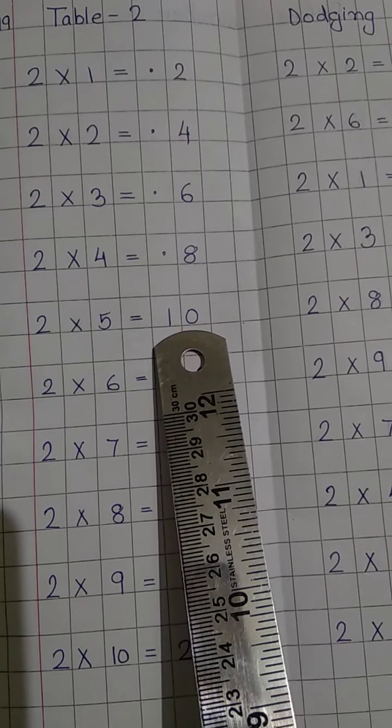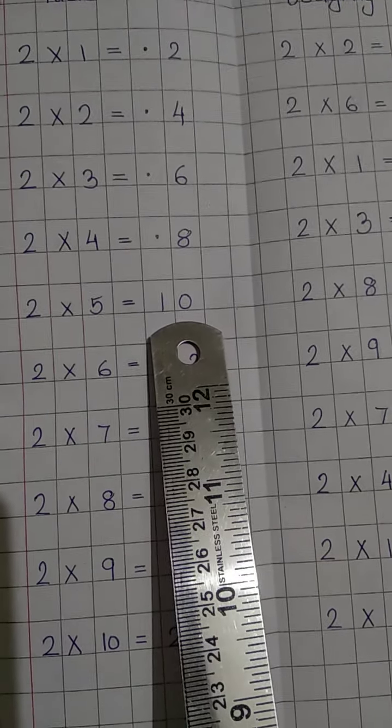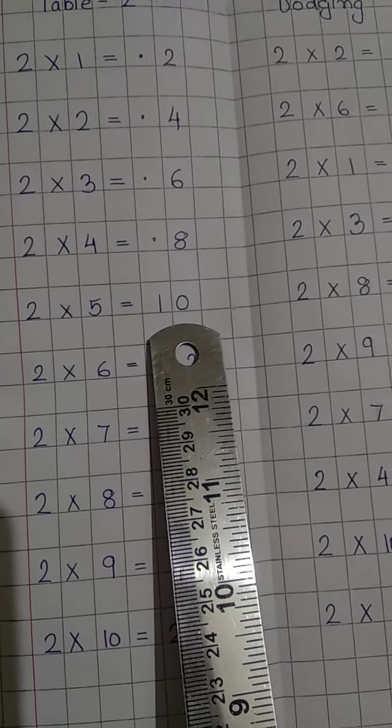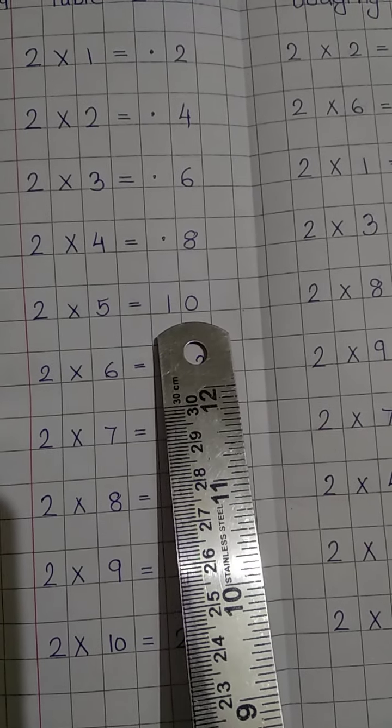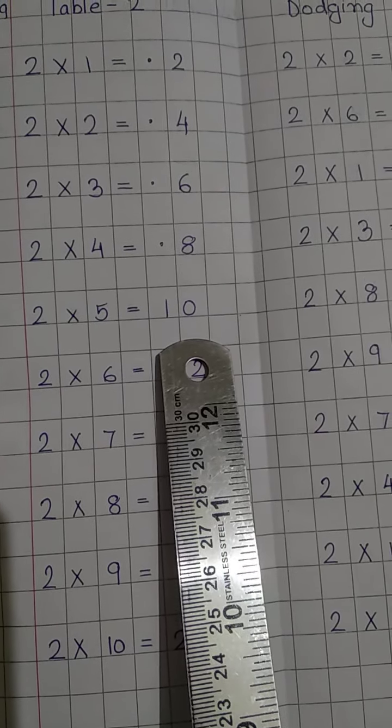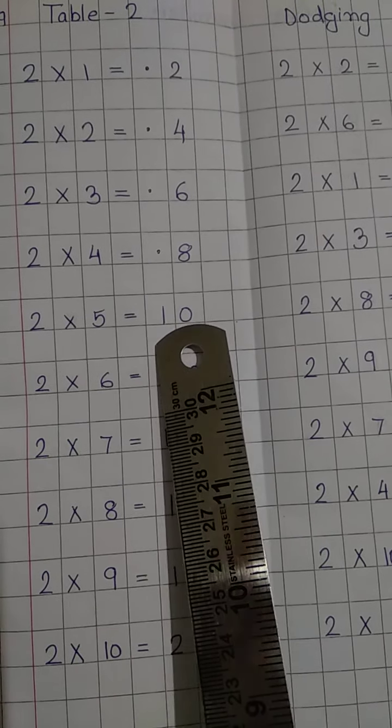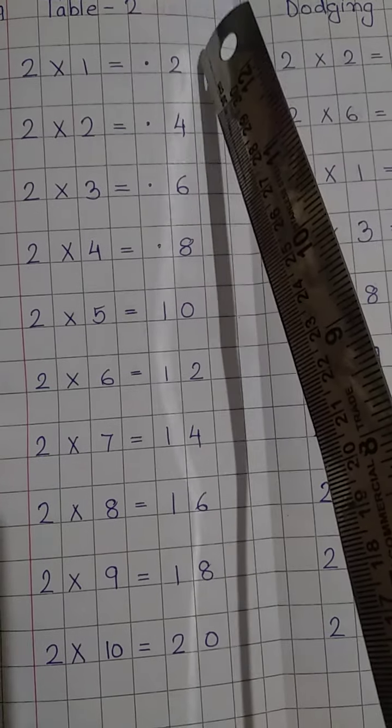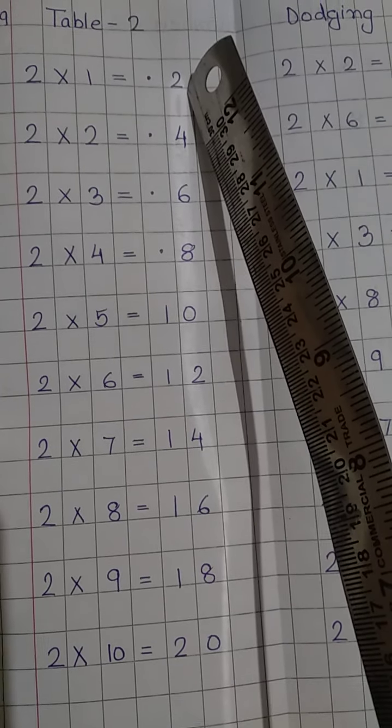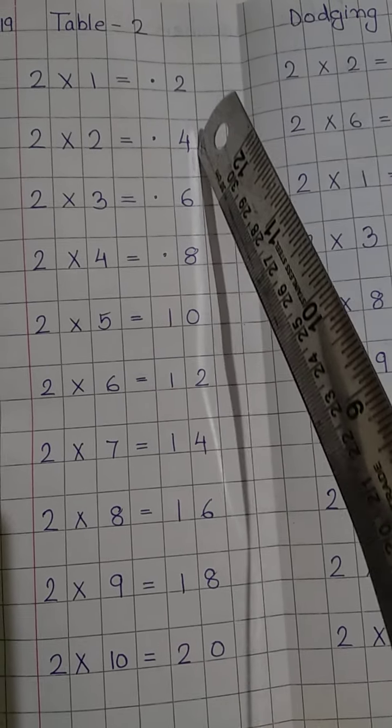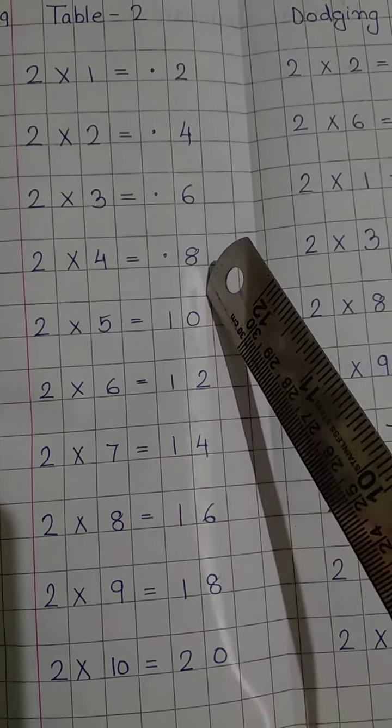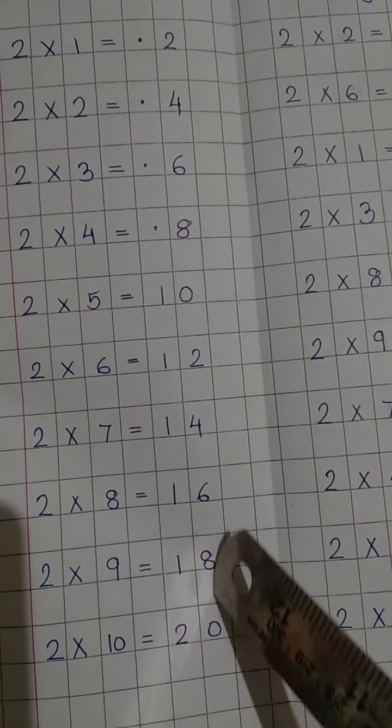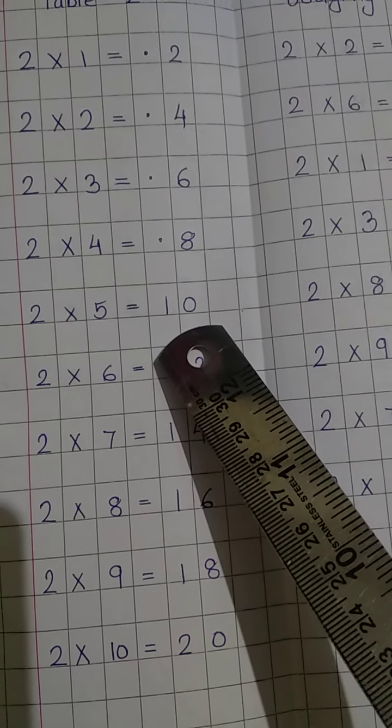I will tell you later why you have to write like this, when we learn about numbers once again. But for now, make sure that you put the dot in the first box and then write in the next box whenever there is a single digit number. And when there are 2 digits in the number, you can write it as it is.